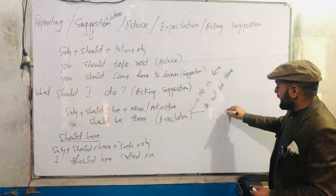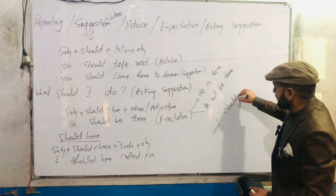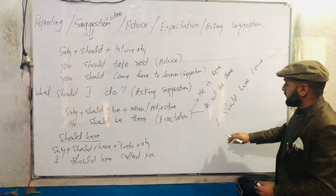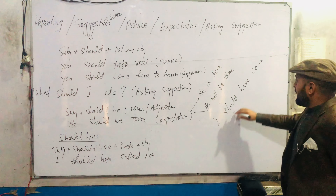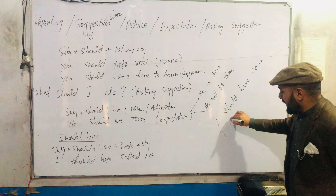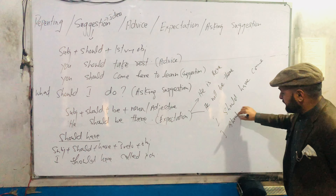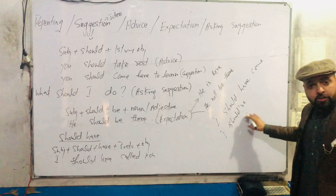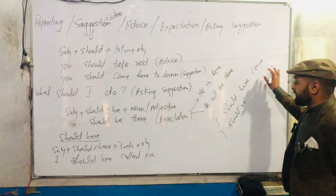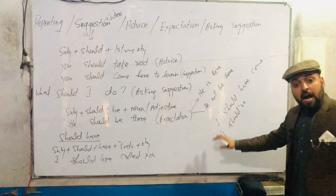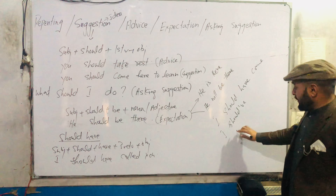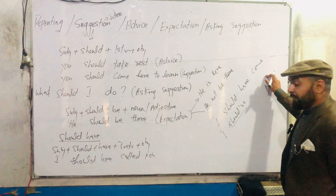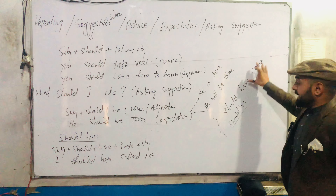Note that native English speakers say 'should have' contracted quickly. For example: 'I should have come' — not paused separately. It is said smoothly as 'I should have come.' So 'should have' followed by the third form of the verb is the correct way to express repenting.